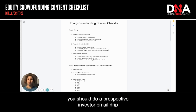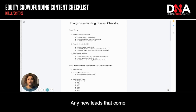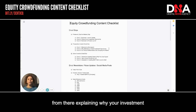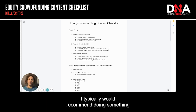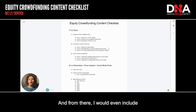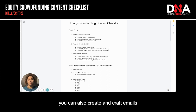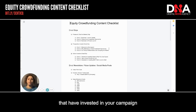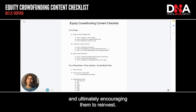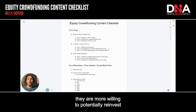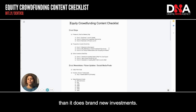You should do a prospective investor email drip connected to a Facebook lead form ad campaign. Any new leads that come into that campaign should get one, a welcome email, and then two, a series of emails explaining why your investment opportunity is an incredible investment. I typically recommend doing something about the market and why the market opportunity is awesome, something about your unique differentiators, and if you have investor testimonials, video, or press features, you can craft emails around that content as well. The last drip is for converted or active investors — the goal is keeping them warm and encouraging them to reinvest. They are the lowest hanging fruit since they've already invested, making reinvestment much easier than a brand new investment.